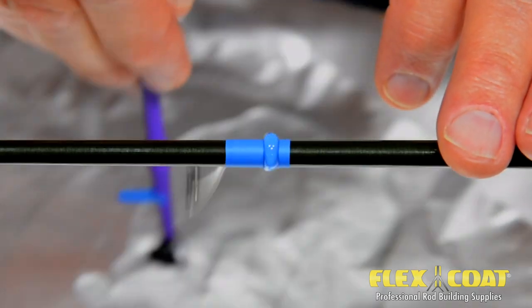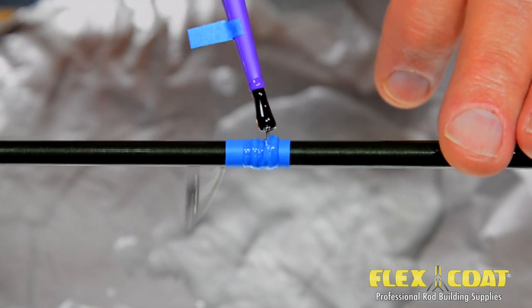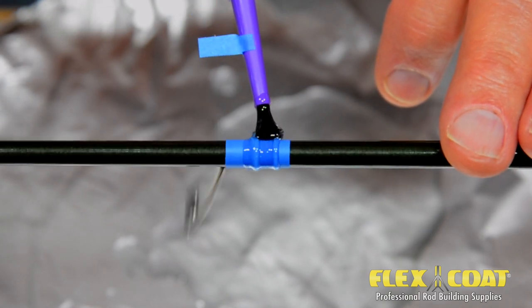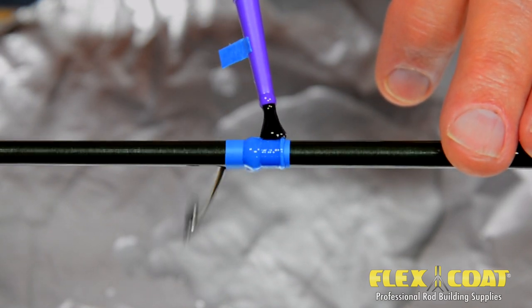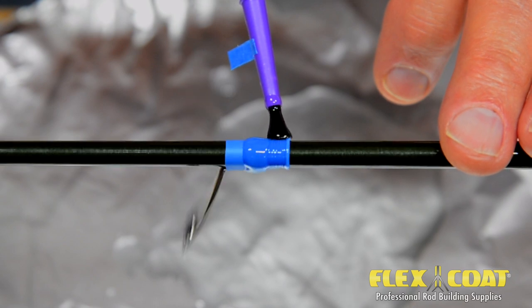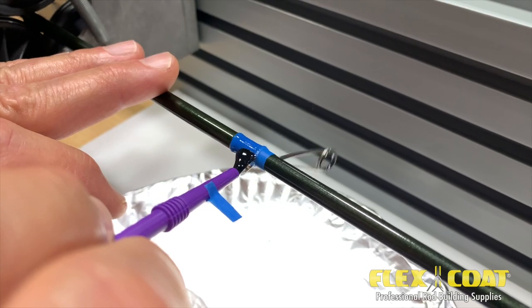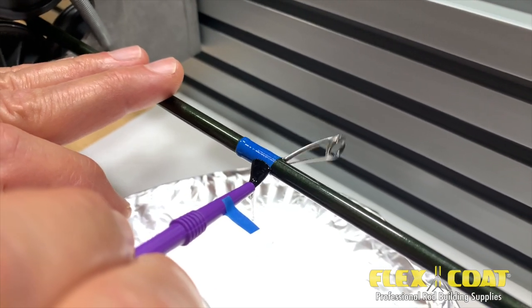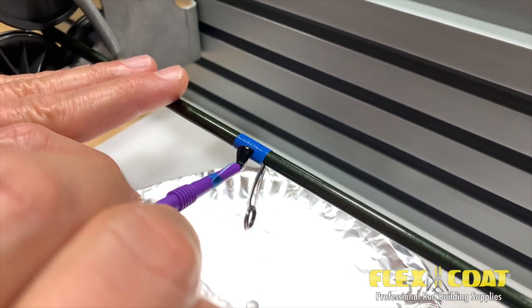Moving on to smaller wraps and guides, Roger switches to a 1⁄8 inch purple brush and again loads up the finish starting at the tip of the guide foot. Rolling the brush and moving toward the end of the wrap, Roger can keep a clean edge and come back to take off the excess for this first saturating coat.